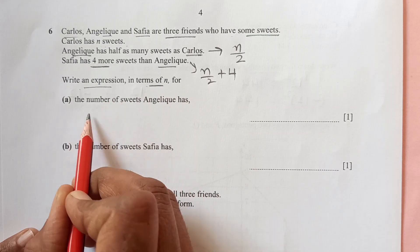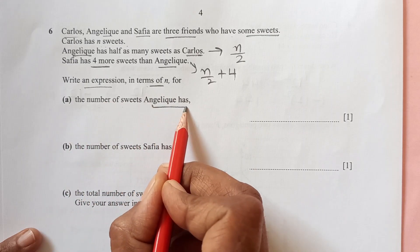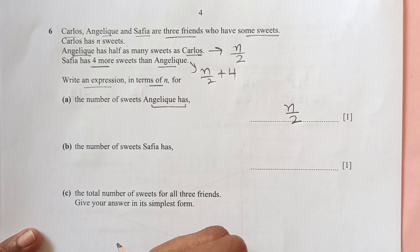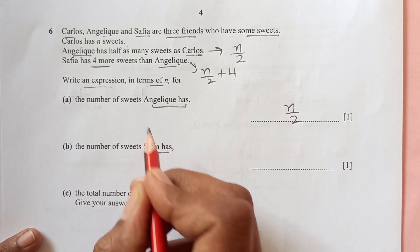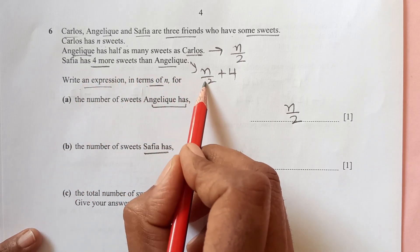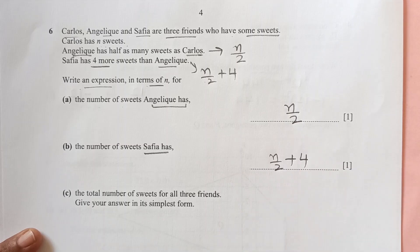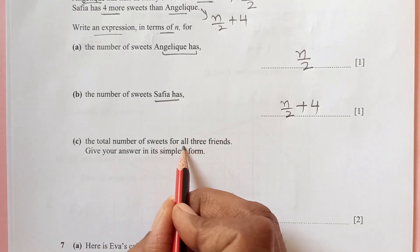Write an expression in terms of n for the number of sweets Angelic has. For Angelic, we have n over 2, so directly we are just going to write down n over 2. The number of sweets that Safia has: Safia has n over 2 plus 4.